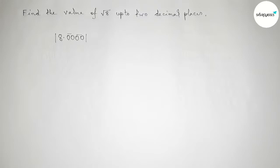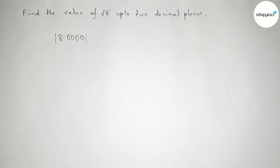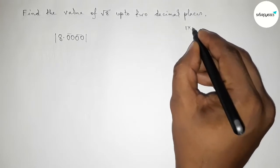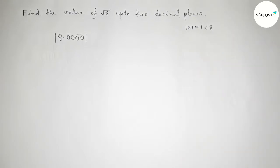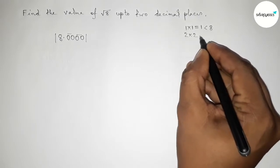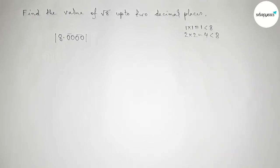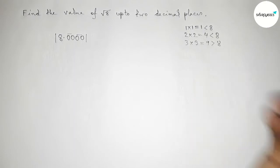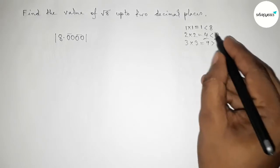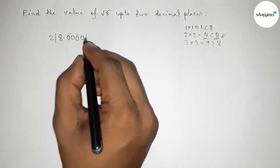Next, draw the division line on both sides. Now we have to choose a number and multiply it by itself, which is less than and almost near 8. Taking 1 times 1 equals 1 — less than 8 but not close. Taking 2 times 2 equals 4 — less than 8 and almost near 8. Taking 3 times 3 equals 9, which is greater than 8. So we take 2, since 4 is less than and almost near 8.